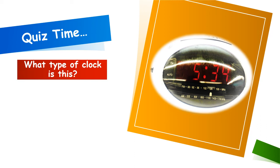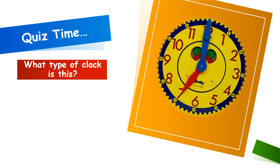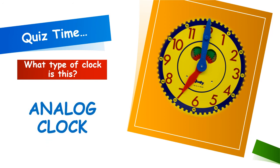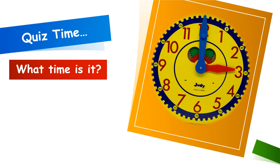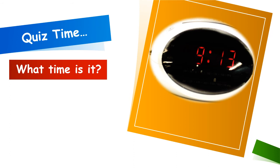Quiz time! What type of clock is this? If you said digital clock, you are correct. What type of clock is this? If you said analog, that is correct. What time is displayed on this clock? If you said 3 o'clock, that is correct. What time is it? Remember, we say the hour first and then the minutes. Did you say 9:13? That is right.